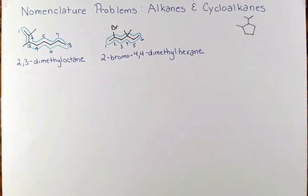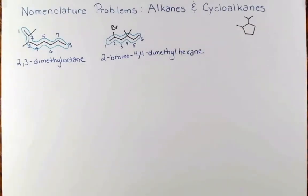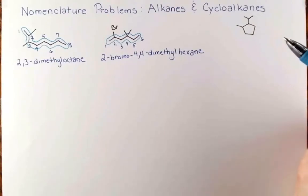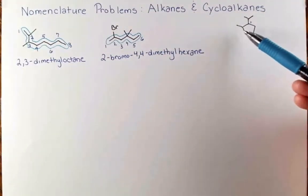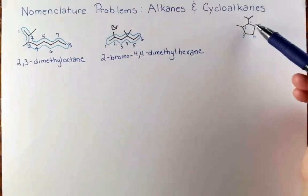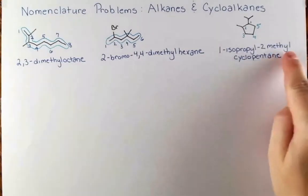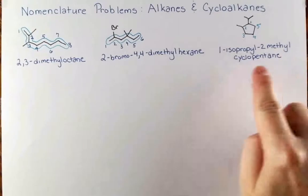Now let's do a cyclic example. We have a 5-membered ring: 1, 2, 3, 4, 5 — so this is going to be a cyclopentane. How should we number our substituents? We have two alkyl groups coming off. We number in a way that puts the lowest number on the substituent that comes first in the alphabet. Isopropyl, starting with 'I', comes before 'M' for methyl, so isopropyl is number 1. We number counter-clockwise to hit the methyl with a low number. This compound is 1-isopropyl-2-methylcyclopentane.